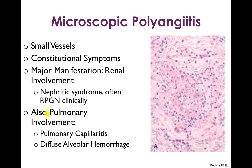The next ANCA-associated small vessel vasculitis is microscopic polyangiitis. It involves small vessels and can begin with constitutional symptoms. The major manifestation is renal involvement in the form of nephritic syndrome, which often presents as rapidly progressive glomerulonephritis with crescents on kidney biopsy. There is also pulmonary involvement, such as pulmonary capillaritis or diffuse alveolar hemorrhage.